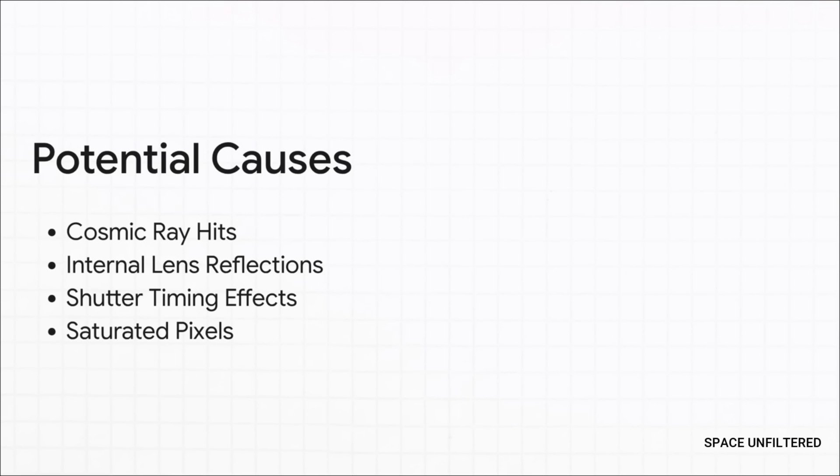And there are a ton of things that can cause them. A single cosmic ray, a tiny, high-energy particle zipping through space, could hit the camera's sensor just right and light up a whole line of pixels. Or you could have a bright light source just off-camera causing a reflection inside the lens. It's not that the camera's broken. It's just physics doing its thing.